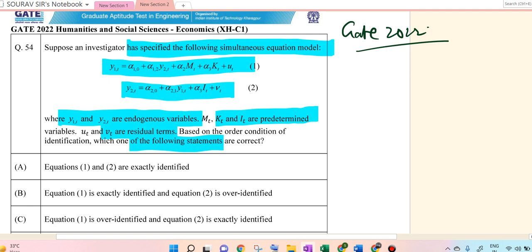So equation 1 is exactly identified, this is directly exactly identified. There is no problem in it. And for equation 2, this is an over-identified structure because of this part, so it is an over-identified structure. So option B is correct.